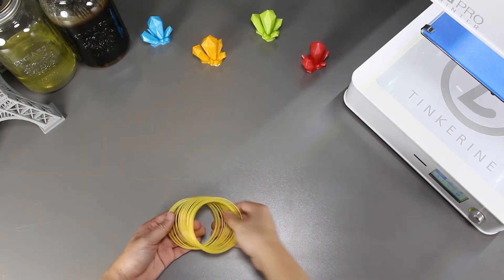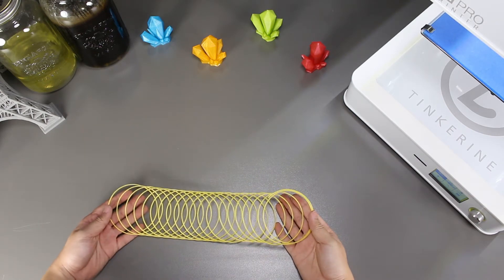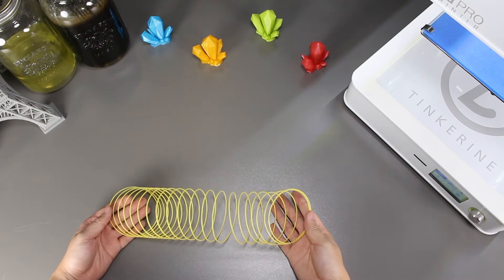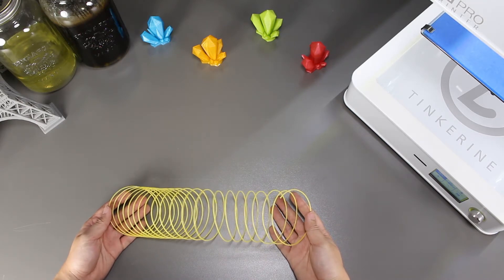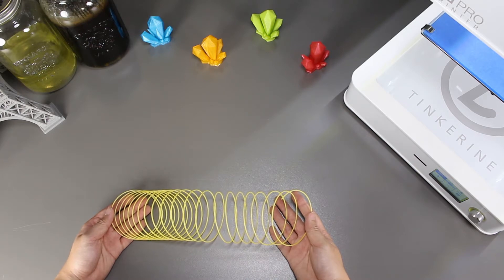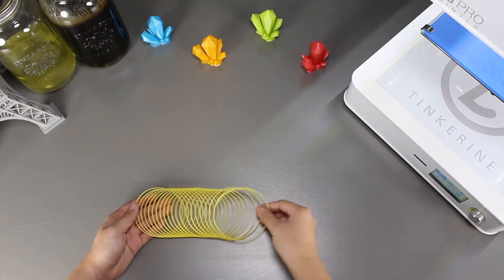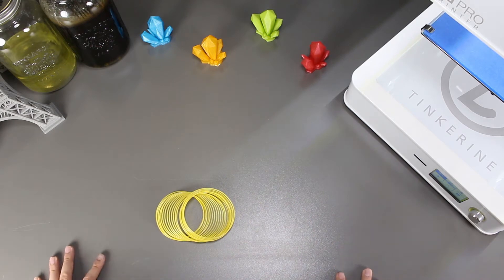Welcome to another episode of Tinkering Experiments. Today we are going to do a continuation on PLA being exposed to different environments and how it would affect the print after the exposure. For this time, we will be exposing it to direct sunlight and UV rays.